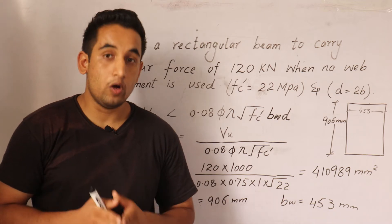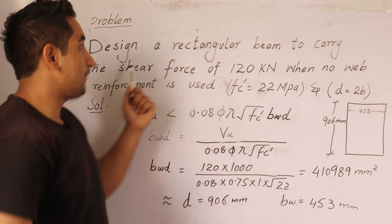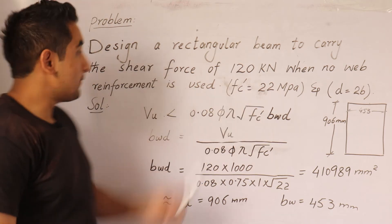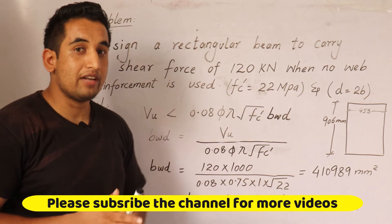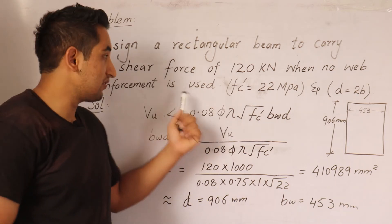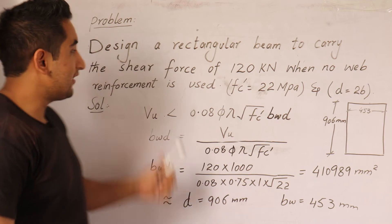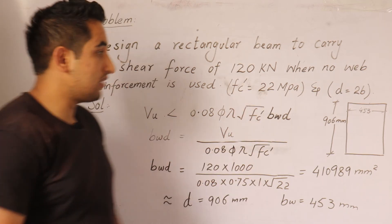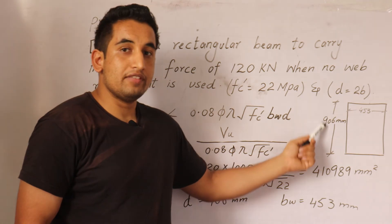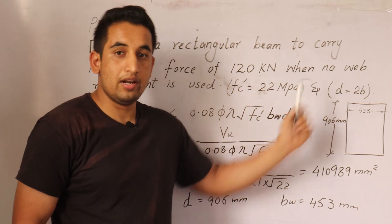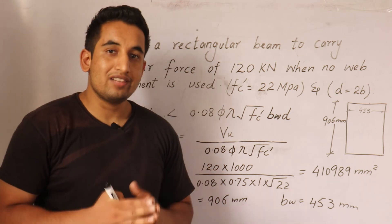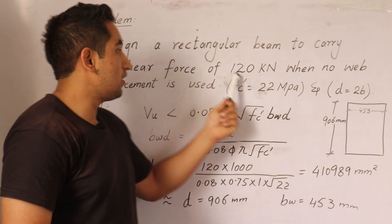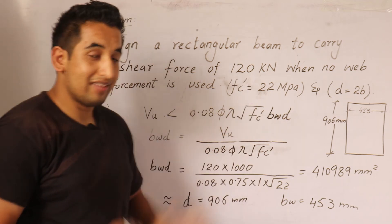In this example, we are going to design a rectangular beam that has to carry a shear force of 120 kilo Newtons. In this particular beam we do not have to provide web reinforcement — the whole shear force has to be resisted by concrete itself. The 28-day compressive strength of concrete is 22 MPa, and we assume the depth of the beam is two times its width. We have to design the cross-section that could resist this 120 kilo Newton shear force.